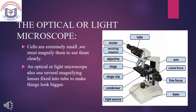Optical or Light Microscope: Cells are extremely small — we must magnify them to see them clearly. An optical or light microscope uses several magnifying lenses fixed into a tube to make things look bigger.